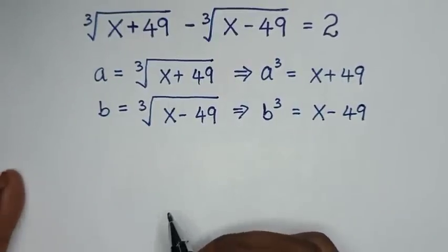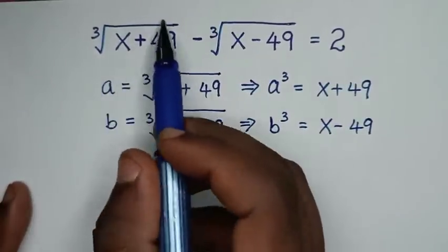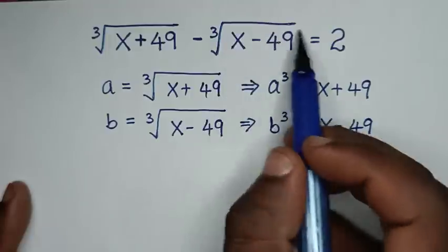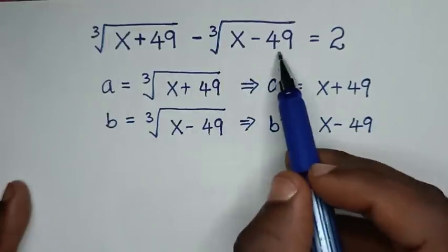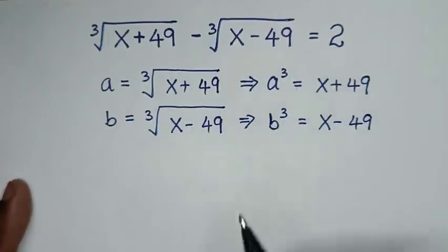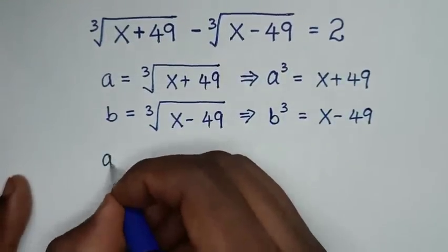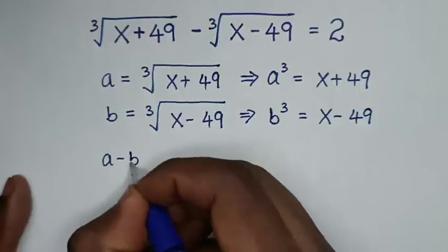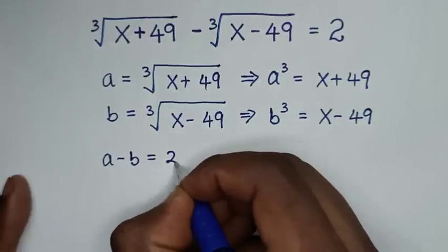Then, since the original equation relates a and b, it will be a minus b is equal to 2. So we have our first equation: a minus b equals 2.